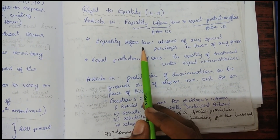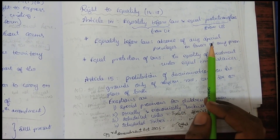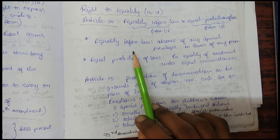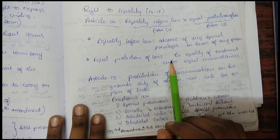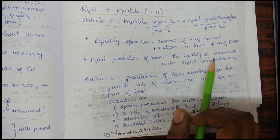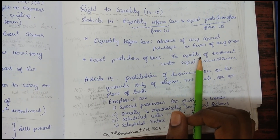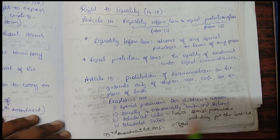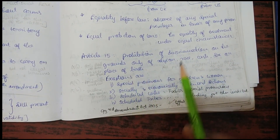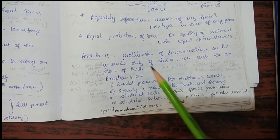Equality before law means the absence of any special privilege in favour of any person. Equal protection of laws means equality of treatment under equal circumstances — all laws are applied equally to each and every person. Article 15 deals with prohibition of discrimination on the grounds only of religion, race, caste, sex, or place of birth.